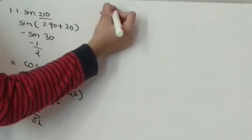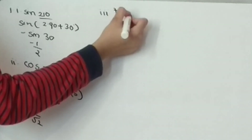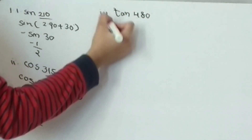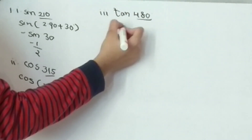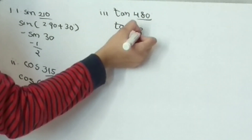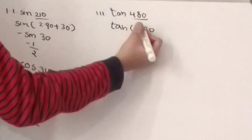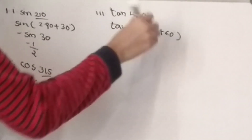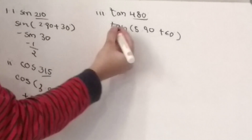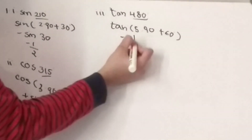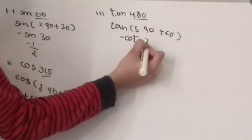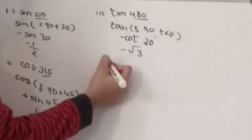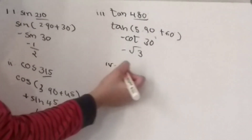Third one, we will see tan(480°). Again, same thing — we should split that. It will be 5×90° + 60°. Then it will become minus cos(30°), which is minus √3.